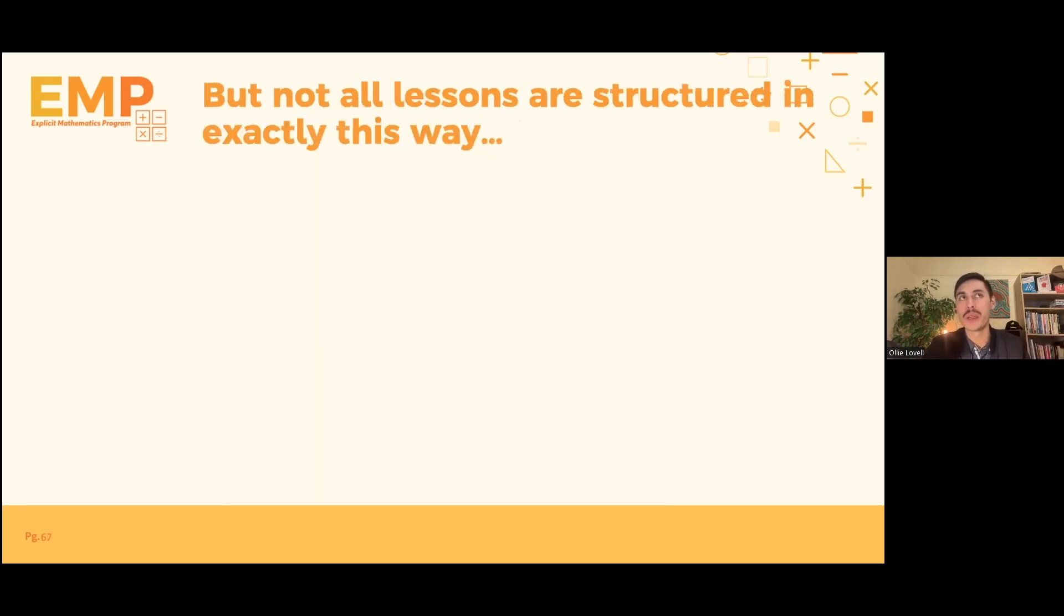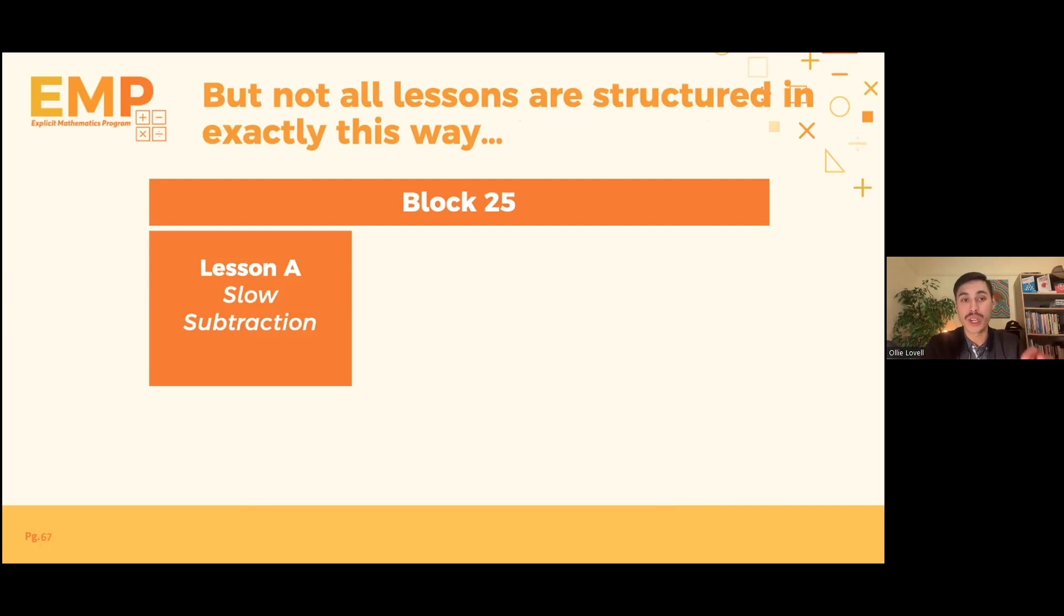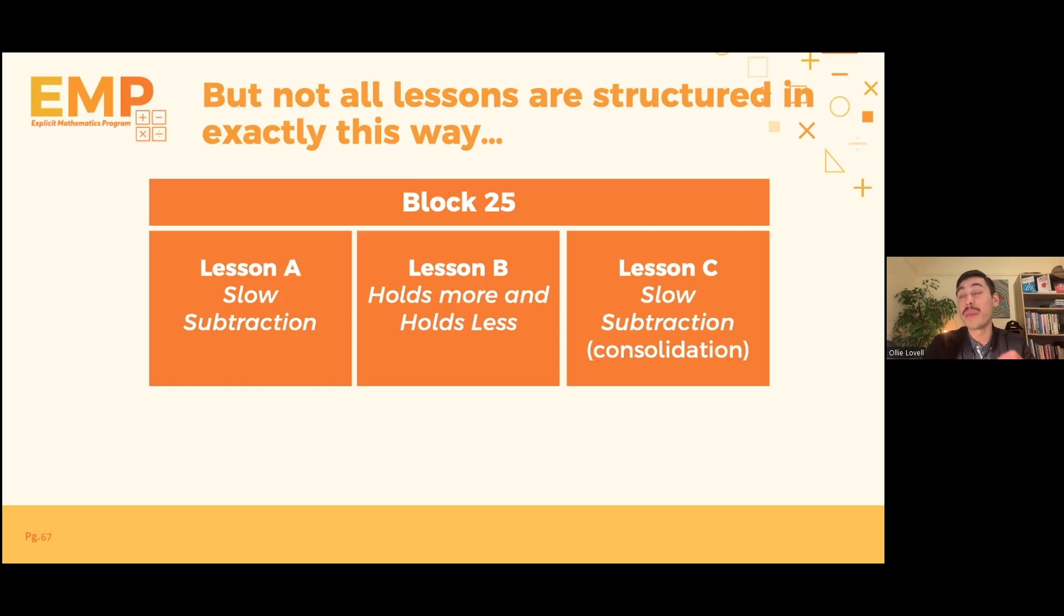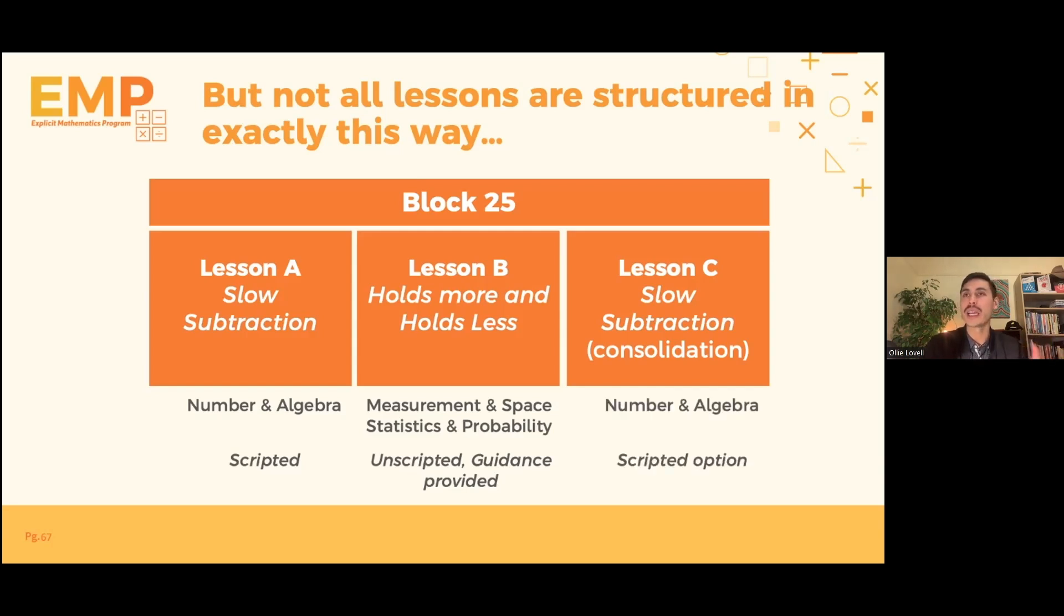But as I mentioned, not all lessons in EMP are structured exactly this way. So our lessons actually come in a block and a block includes three lessons. Lesson A, lesson B, lesson C. So from this particular slow addition block, these are what these three lessons look like. First, we had slow subtraction, which is the lesson excerpt that you just saw. Lesson B is about what holds more and what holds less. Lesson C was about slow subtraction again, but it was actually a consolidation lesson. So you might notice that lesson A comes from number and algebra, and that lesson is completely scripted. Lesson B comes from measurement and space or statistics and probability, in this case measurement and space. And this one is unscripted with guidance provided. And we'll show you an example of that in a moment. And lesson C comes from number and algebra, and it has a scripted option.